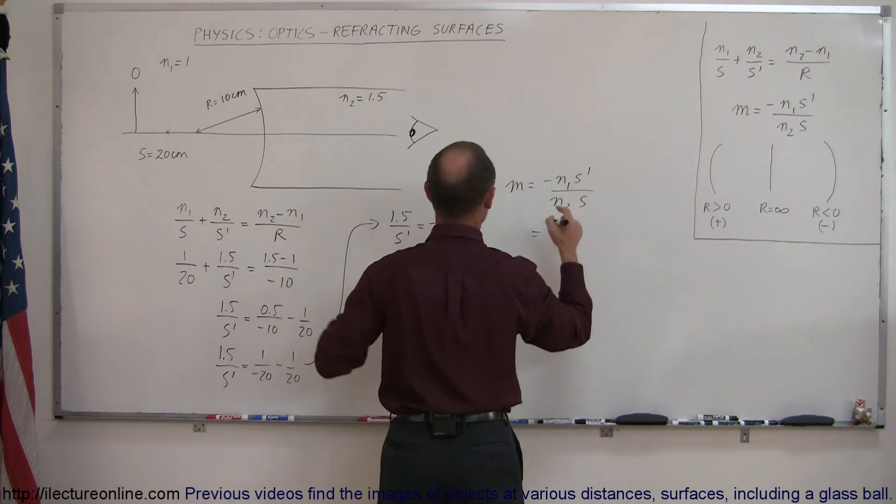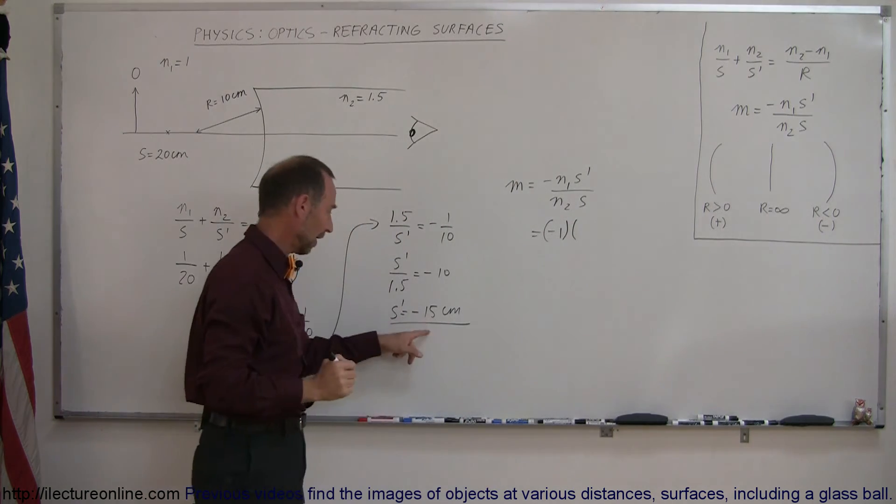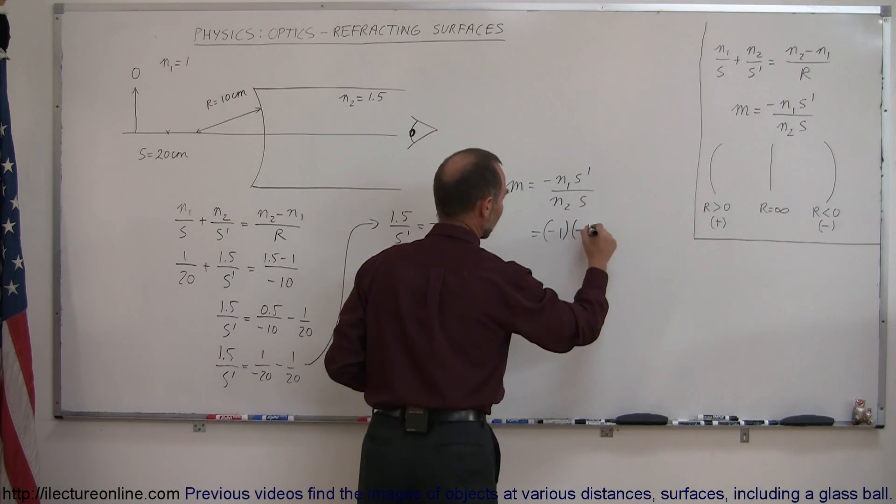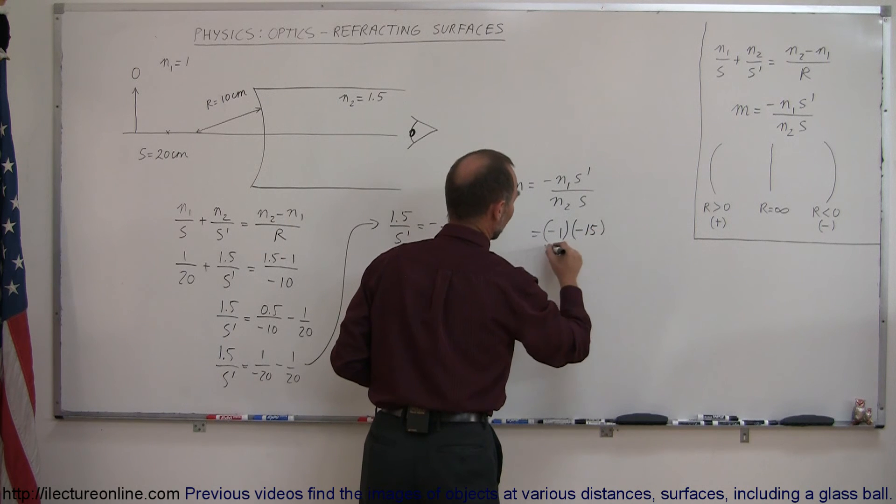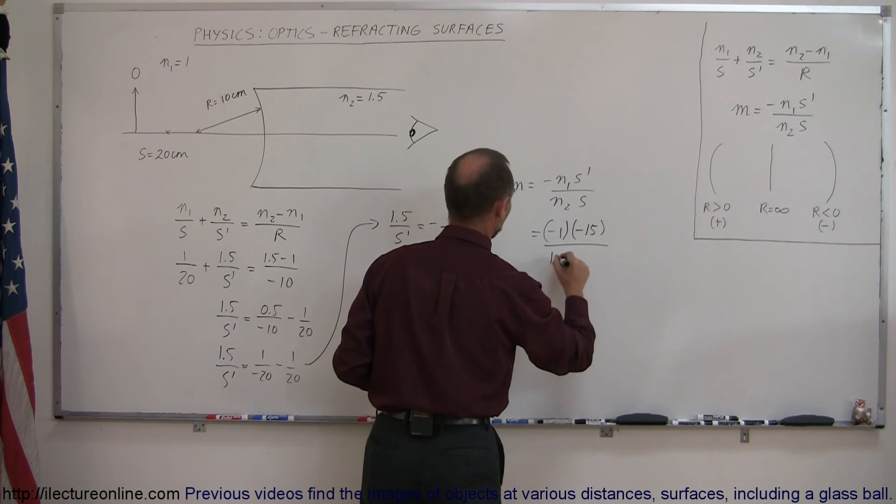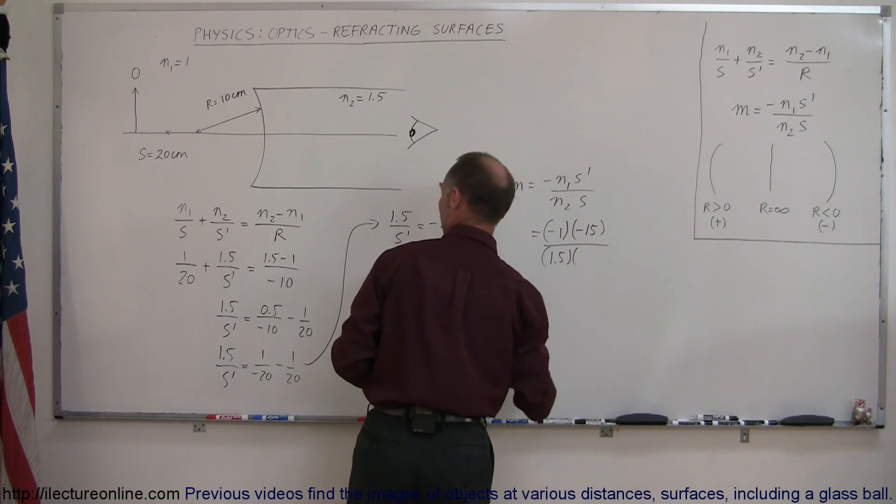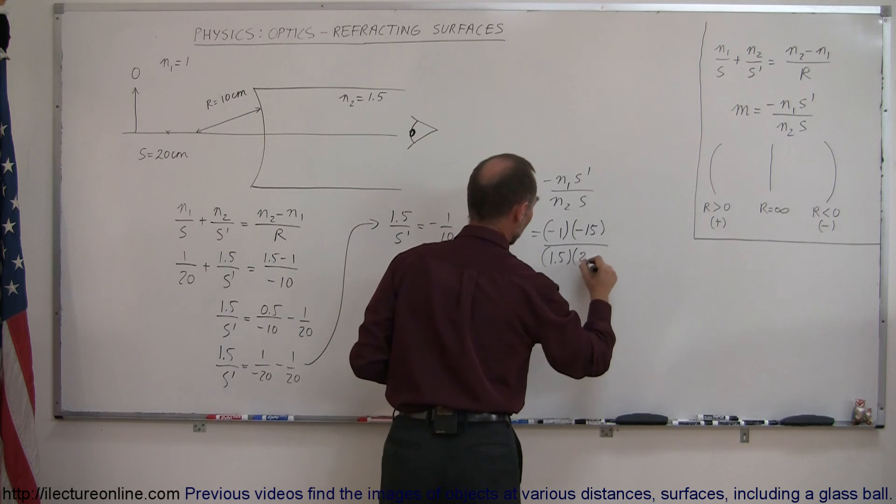N1 was 1, so we have minus 1 times S prime, which we just found, was a minus 15 centimeters. Divided by N2, which is 1.5, times S, and the object was placed at a distance of 20 centimeters.